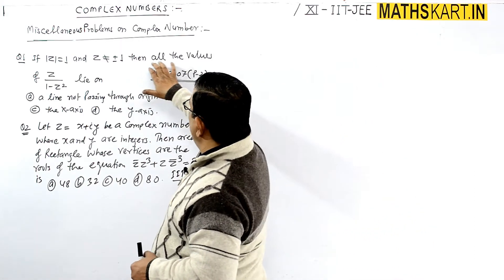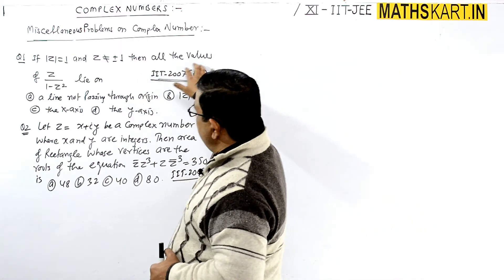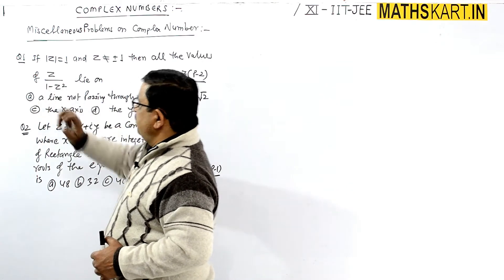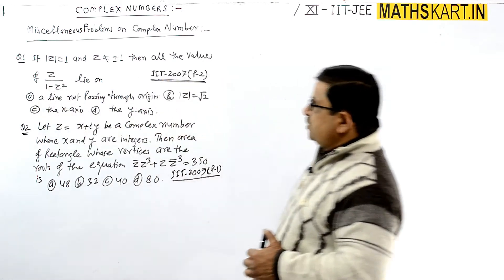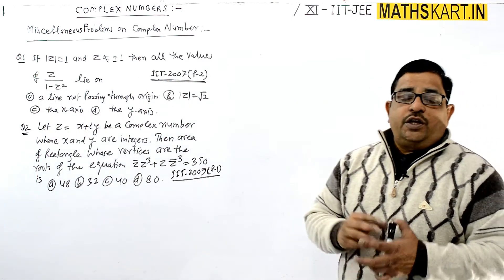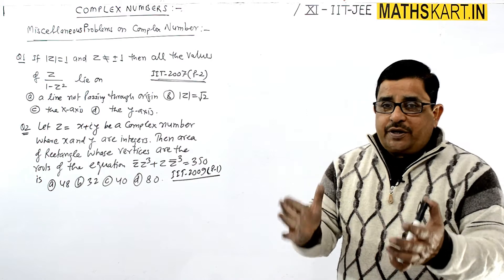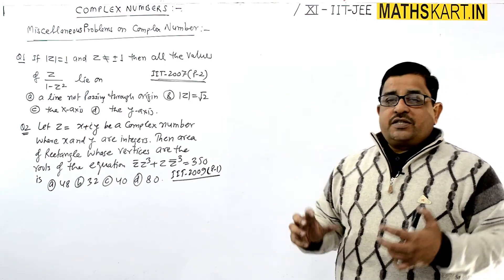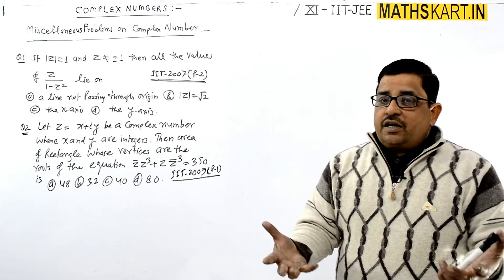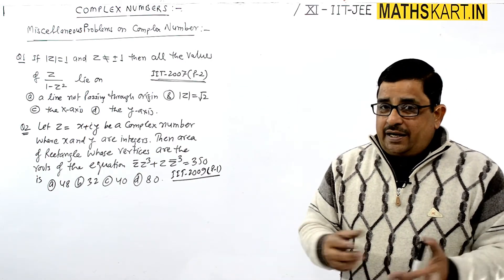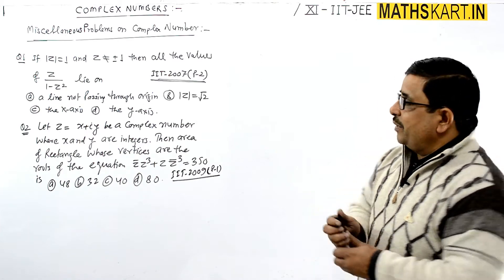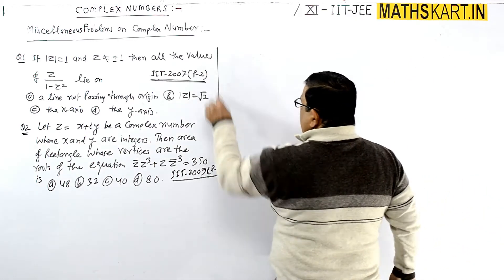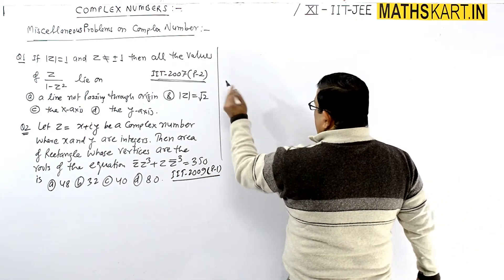Then all the values of z divided by 1 minus z squared lie on — we need to determine on what particular curve or axis the expression z upon 1 minus z squared lies. We will evaluate this particular complex number.